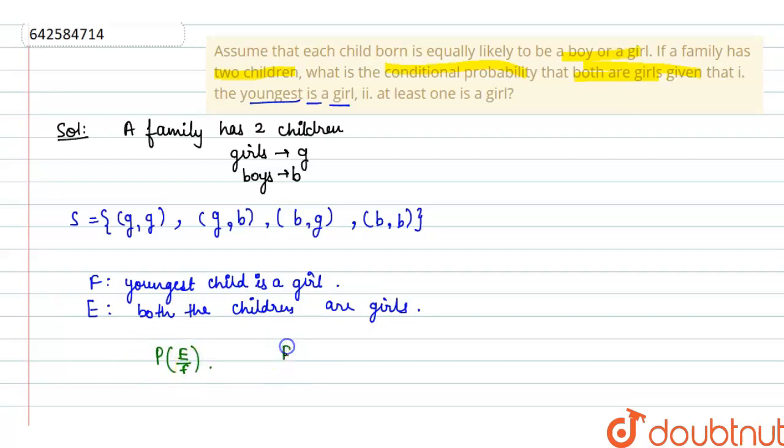Firstly, case for E. According to E, both the children are girls, so only one case is there, which is GG. So probability of E is 1 upon 4.